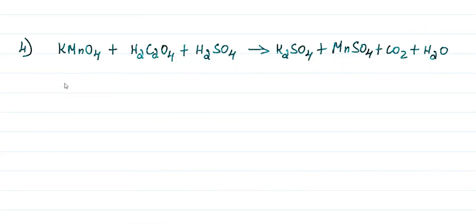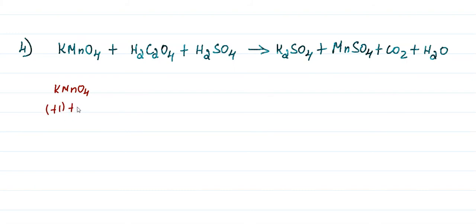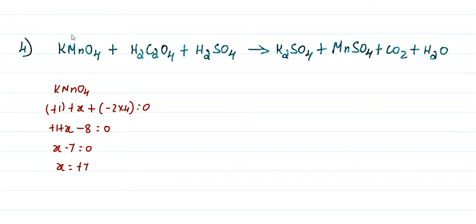Last question: potassium permanganate — KMnO₄ + H₂C₂O₄ + H₂SO₄ → K₂SO₄ + CO₂ + H₂O. Oxidation and reduction. For KMnO₄: plus 1 plus x plus 2 into 4 minus 8 equals zero, so x minus 7 equals zero, and x equals plus 7. So Mn in MnO₄ has oxidation number plus 7.